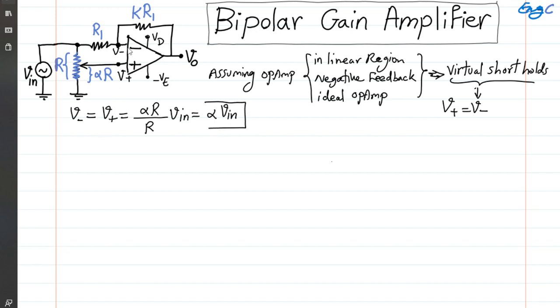Now at this node, input to the negative terminal where V negative is the voltage, I can write a KCL at the negative input terminal.